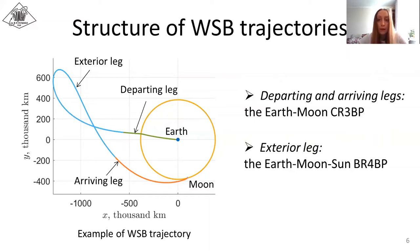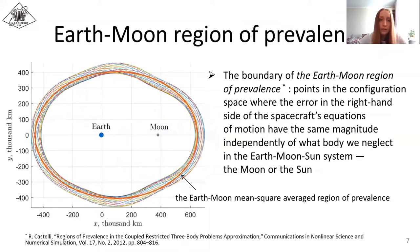For further analysis, it is reasonable to limit the region where the gravitational perturbation from the Sun can be neglected. The idea put forward in this study is based on the concept of the region of prevalence recently introduced by Castelli. He defined the boundary of the Earth-Moon region of prevalence at points where the error in the right-hand side of the spacecraft equations of motion have the same magnitude independently of what body we neglect, the Moon or the Sun, in the Earth-Moon-Sun system.